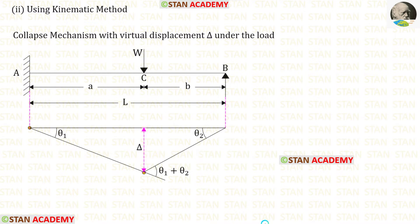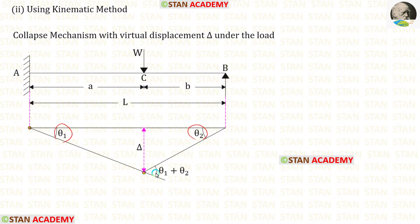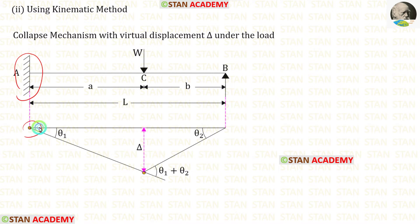Now let us use the kinematic method. Let us assume that due to the load there is a virtual displacement delta. Let us keep this angle as theta1 and this angle as theta2, so this angle should be theta1 plus theta2. In this beam at the fixed end there is a plastic hinge, and also under the load there is a plastic hinge. At the simply supported end there will be no plastic hinge, so totally there are two plastic hinges.